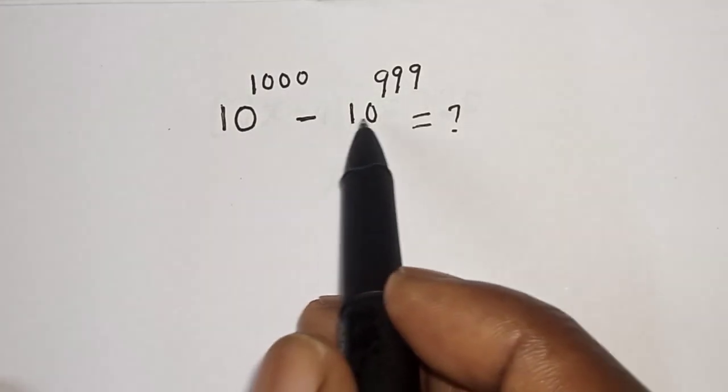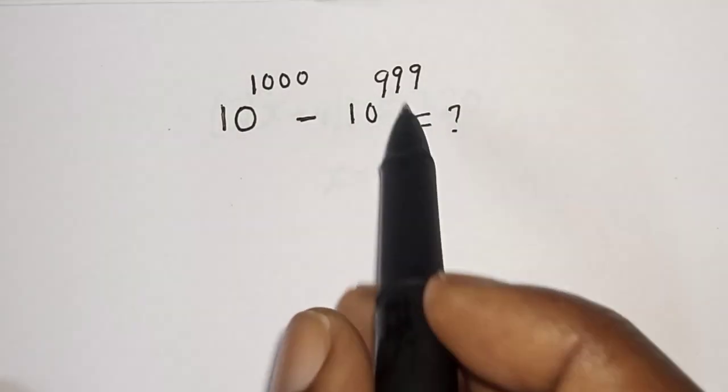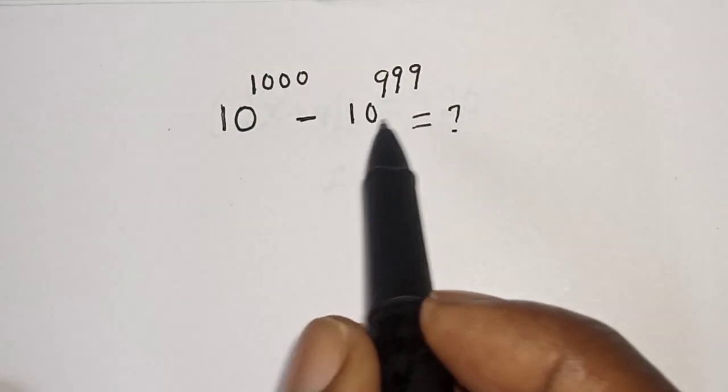10 raised to power 1000 minus 10 raised to power 999 equals what? Hi everyone, welcome to my class.